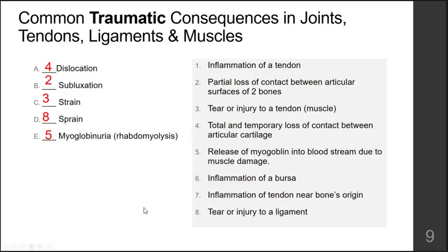Next up, myoglobinuria involves the release of myoglobin into the bloodstream due to severe muscle damage. Myoglobin is a red protein containing heme that carries and stores oxygen within muscle cells — structurally very similar to a subunit of hemoglobin. When released into the blood, it ends up being excreted in the urine, but it's very toxic to the renal tubules and can lead to acute renal failure. Rhabdomyolysis is the rapid breakdown of muscle that causes the release of its intracellular contents, including myoglobin — occurring again with pretty severe muscle damage.